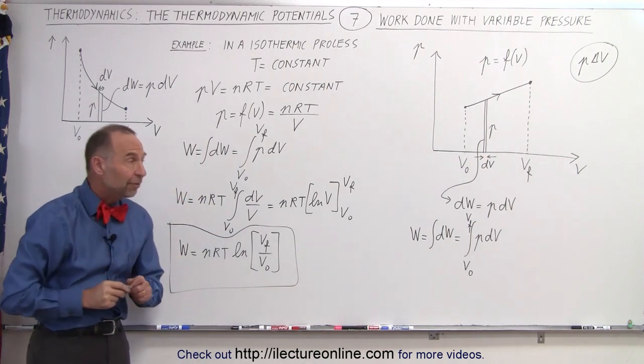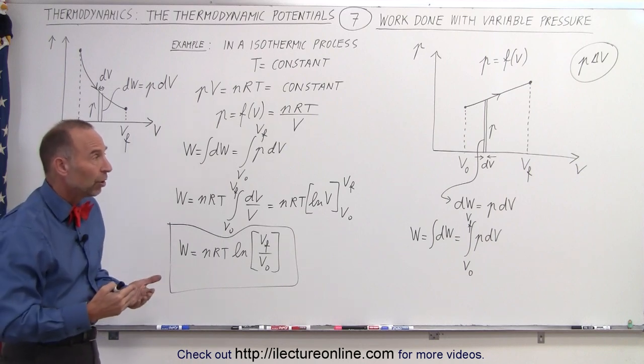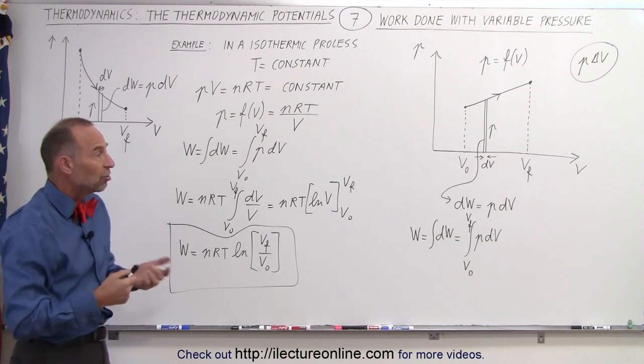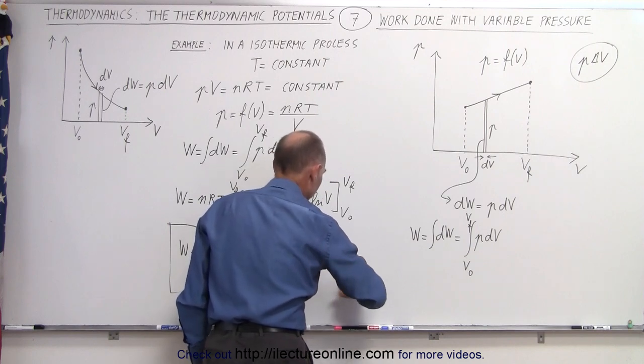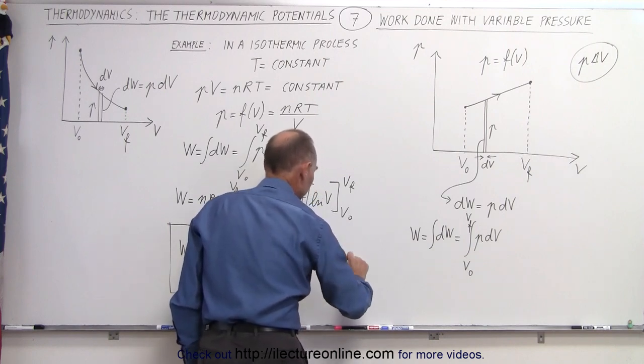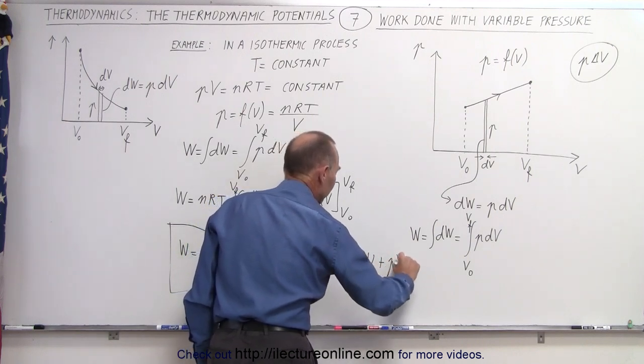So you can see that even if pressure isn't constant, we can still find the P delta V term. So when we need to find the change in enthalpy, if we then define that the change in enthalpy, I got ahead of myself, the change in enthalpy is equal to the change in internal energy plus the work done by the system.